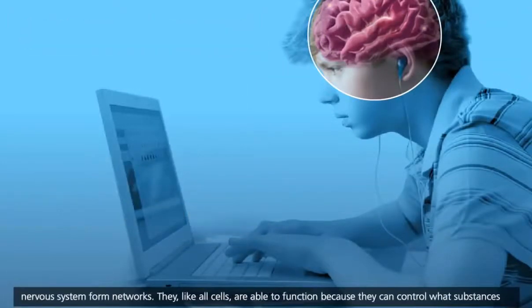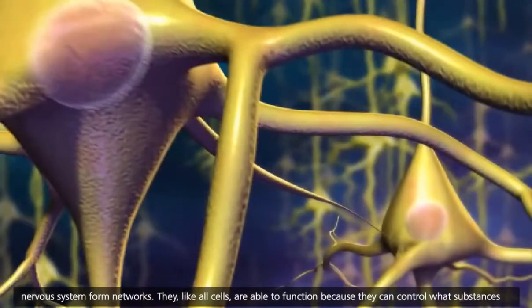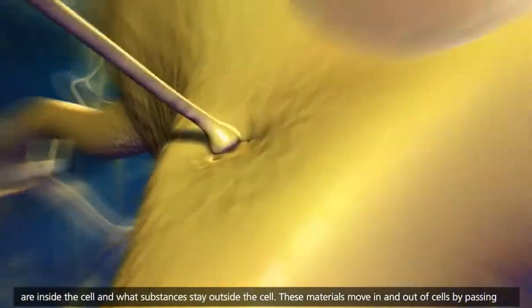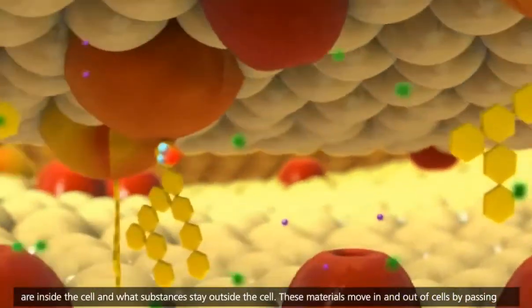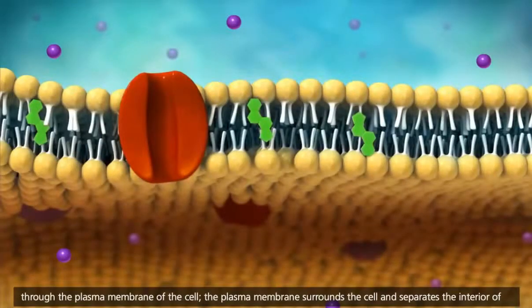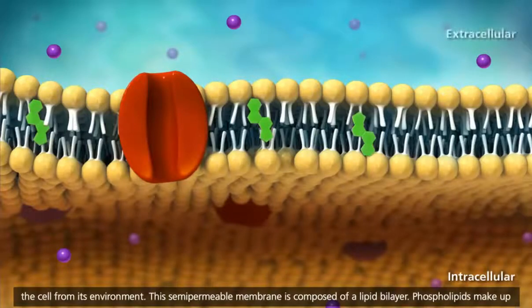The cells of the nervous system form networks. They, like all cells, are able to function because they can control what substances are inside the cell and what substances stay outside the cell. These materials move in and out of cells by passing through the plasma membrane of the cell. The plasma membrane surrounds the cell and separates the interior of the cell from its environment.